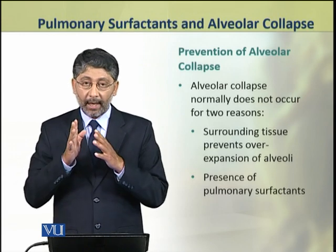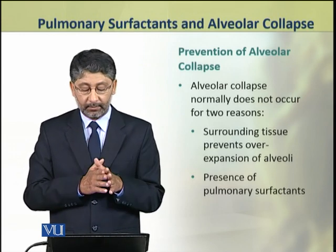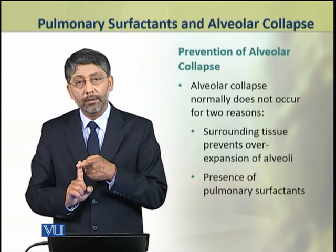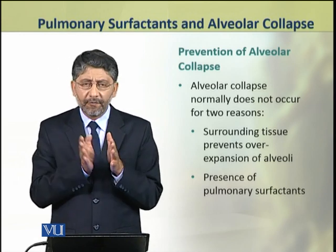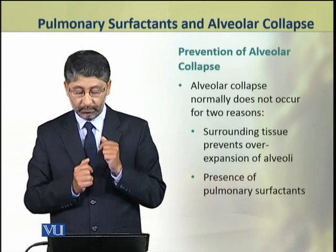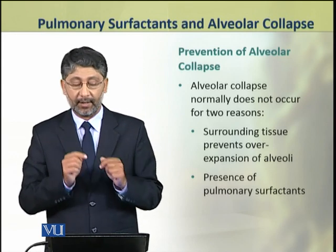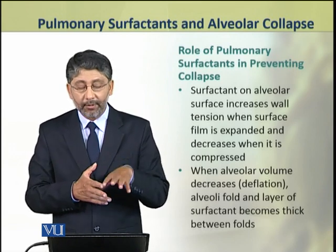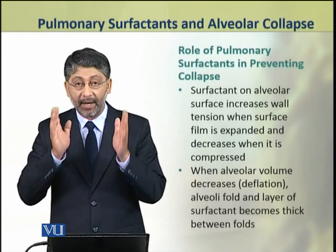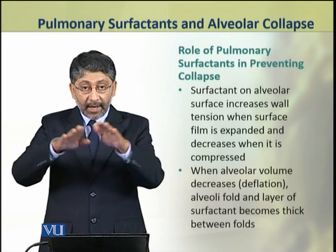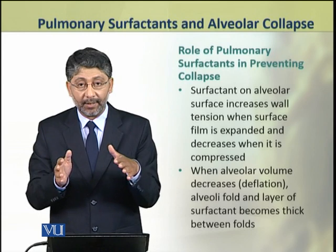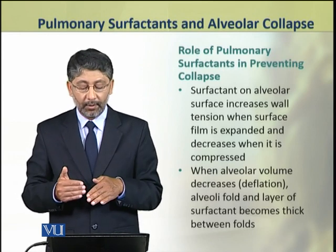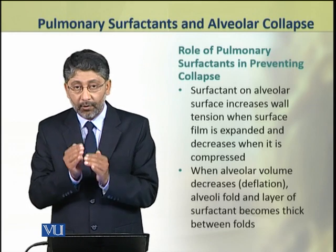Dear students, alveolar collapse does not normally occur. It is prevented because of two factors: number one, the surrounding tissue prevents over-expansion of alveoli, and number two, the presence of pulmonary surfactants. Surfactants on the alveolar surface increase wall tension when the surface film is expanded. When the alveolus is expanding, surfactants increase its wall tension, which resists further stretching. And this wall tension is decreased by surfactants when the alveoli are compressed.